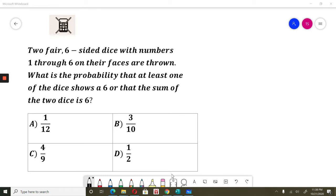Two fair six-sided dice with numbers 1 through 6 on their faces are thrown. What is the probability that at least one of the dice shows a 6 or that the sum of the two dice is 6? A: 1/12, B: 3/10, C: 4/9, D: 1/2.